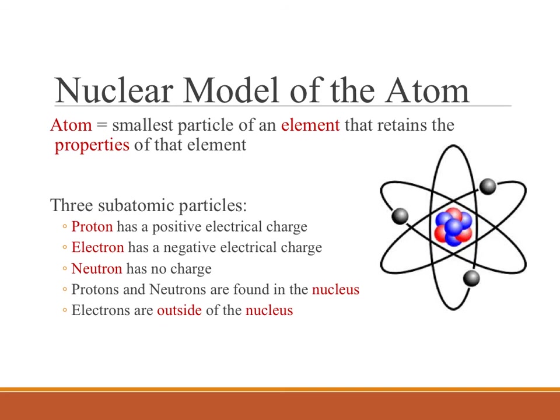This description of an atom in terms of its three subatomic particles is known as the nuclear model of the atom. Remember that an atom is the smallest particle or piece of any element on the periodic table that retains or keeps all the same properties of that element.